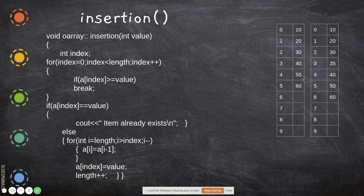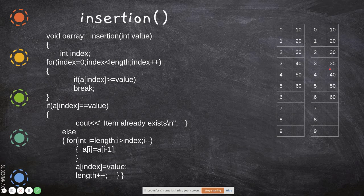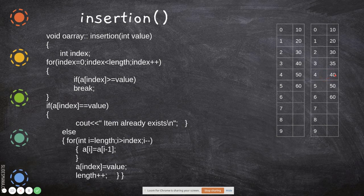All elements have been shifted one position to the right from the bottom: 60 moved, 50 moved, 40 moved. Now we place a[index] = 35, so 35 is placed at index 3. The value has found its correct sorted position. Similarly, if we then insert 37, the same process shifts elements down and places 37 correctly. After insertion, 'length' is incremented — it now becomes 7, so there are 7 elements at indices 0 through 6.